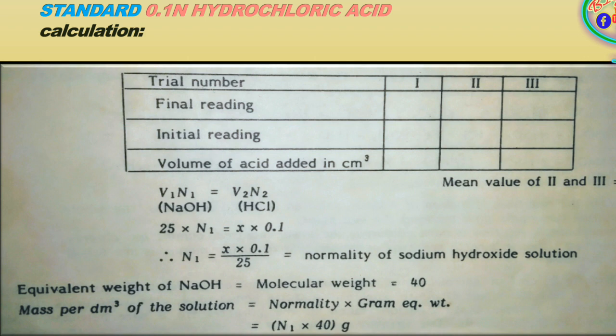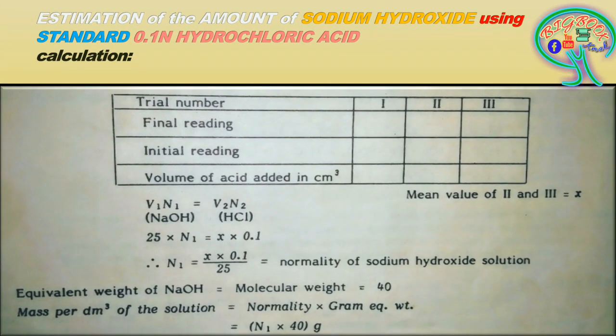So here we have discussed the estimation of the amount of sodium hydroxide using standard 0.1 N hydrochloric acid by the titration method. This was a brief description of the experiment. If you have any doubts or questions, or if you would like me to develop new topics, please let me know.